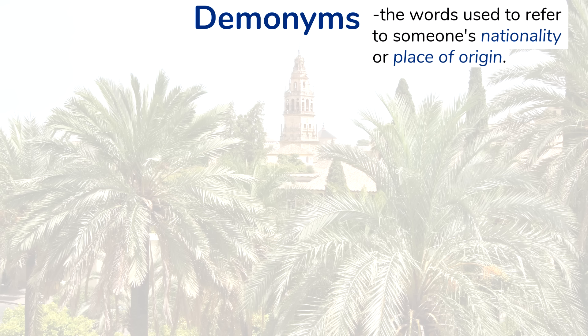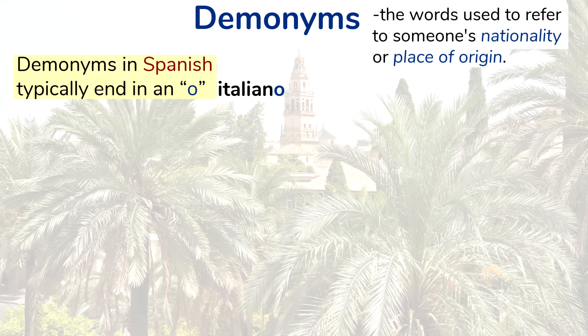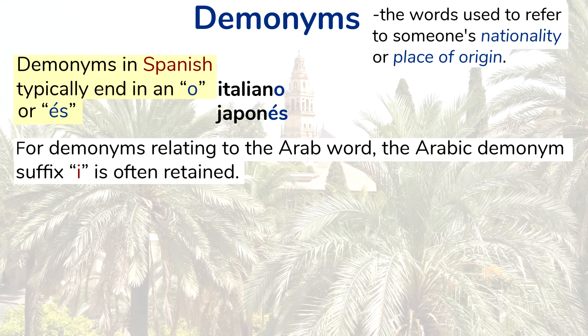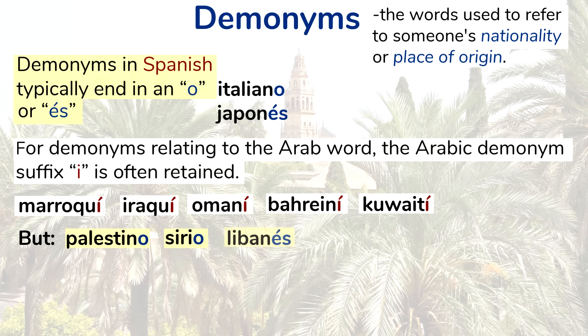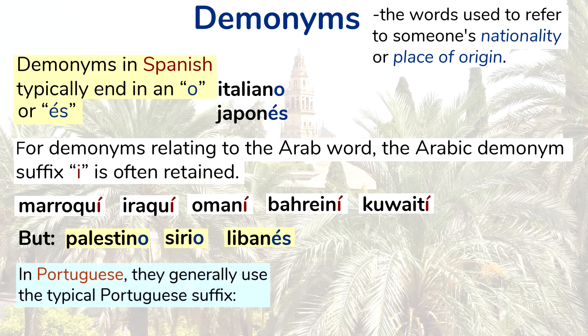Another element of Arabic that influenced Spanish but not so much Portuguese is demonyms — the words used to refer to someone's nationality or place of origin. Demonyms in Spanish typically end in '-o' like 'italiano' or '-és' like 'japonés,' but for demonyms relating to the Arab world, the Arabic demonym suffix '-í' is often retained — for example, 'marroquí,' 'iraquí,' 'omaní,' 'bahreíní,' 'kuwaití.' But that's not the case for all of them: 'palestino,' 'sirio,' 'libanés.' In Portuguese, they generally use the typical Portuguese suffix — 'marroquino,' 'iraquiano.'